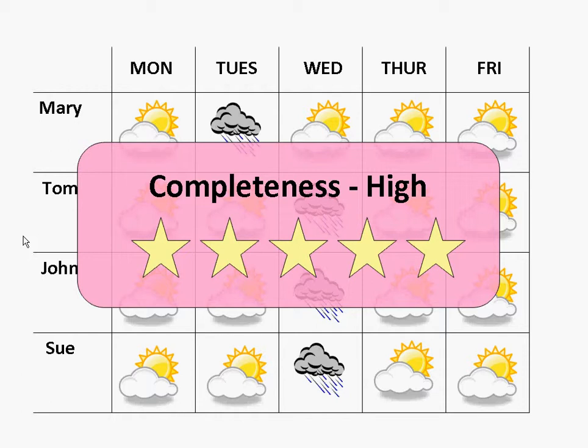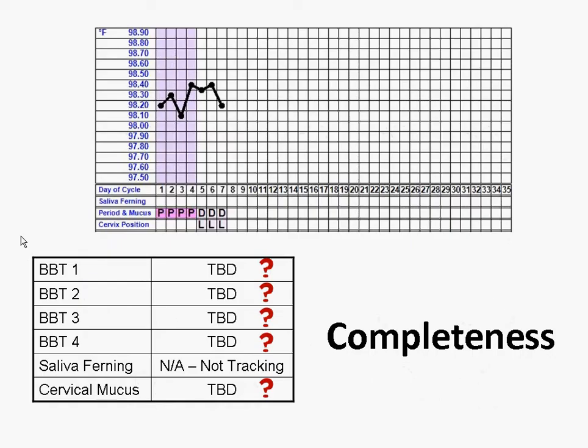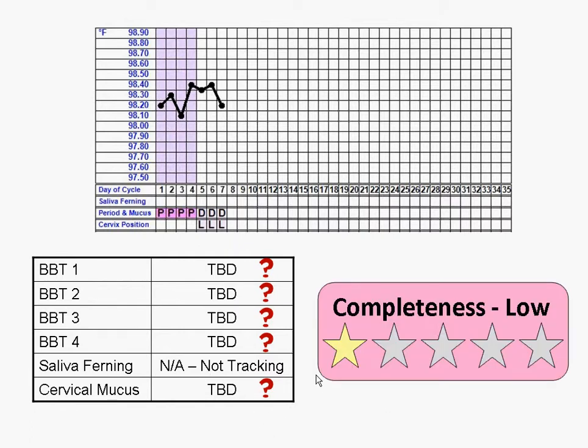Let's take a look at some fertility charts to better understand completeness. In this example, it is early in the cycle. There are six techniques shown on the table, five of which the user is tracking. Since none of the five have calculated ovulation dates yet, we would say that the completeness is low. The completeness will progressively increase from one to five stars as each technique concludes upon its estimated ovulation date.